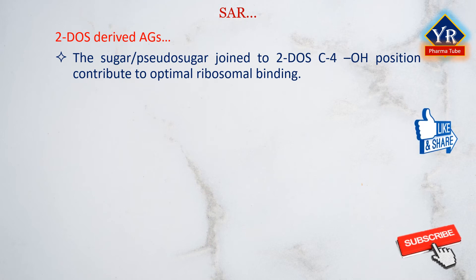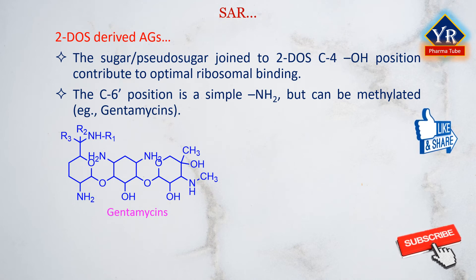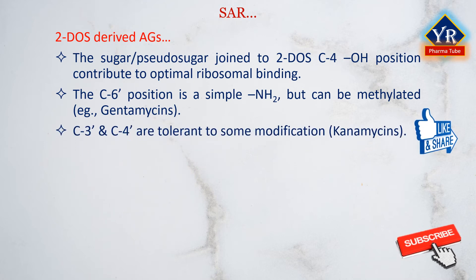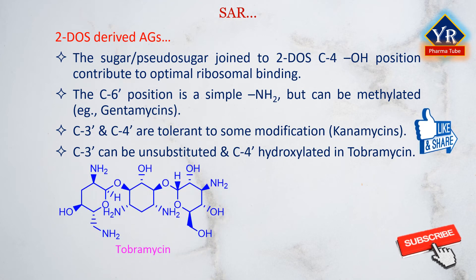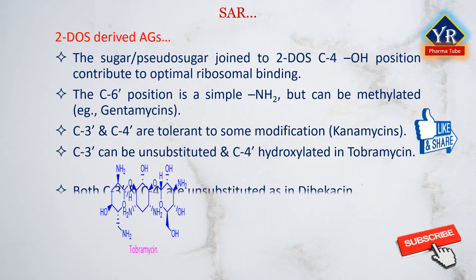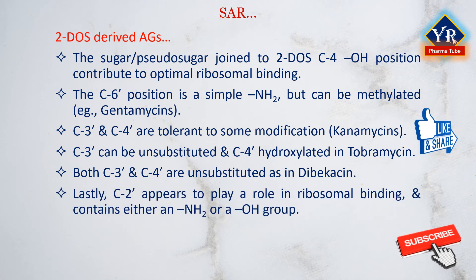The sugar or pseudo-sugar joined to a 2-deoxystreptamine C4 hydroxy position can also vary, although certain key amine and hydroxyl groups appear to contribute to optimal ribosomal binding. The C6 position is usually a simple amine, but this group can be methylated as in some of the gentamicins. The C3 and C4 centers are apparently tolerant to some modifications. These positions are often both hydroxylated, as in kanamycin. However, the C3 can be unsubstituted and C4 hydroxylated as in tobramycin, or both C3 and C4 can be unsubstituted as illustrated by dibekacin. The C4 center can also be unsubstituted, providing the tetrahydropyranyl derivatives sisomycin and netilmycin. The C3 position appears to play a role in ribosomal binding and contains either an amine or a hydroxyl group.